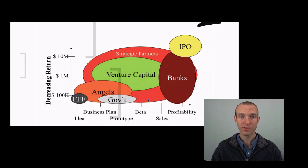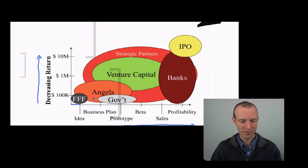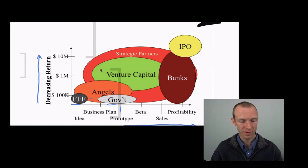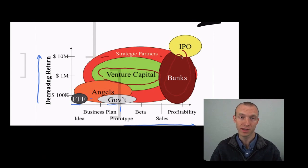You can think about various sources of capital on a two-by-two of decreasing return and decreasing risk. At the very earliest stages where risk is very high and expected returns are perhaps lower, you have the three Fs — friends, family, and fools, as people joke — as well as angel investors and some sources of government funding, which can come in when you only have a business plan or a prototype. There's then a large swath where different venture capital funds will invest, all the way from business plan or prototype through having some initial sales and profitability. Strategic partners — large corporations — might invest at any of these stages. At the very latest stages where risk has been greatly decreased, you might have banks or investment banks putting in money at the stage of an IPO.